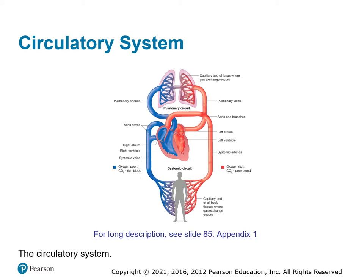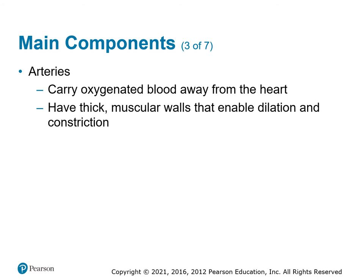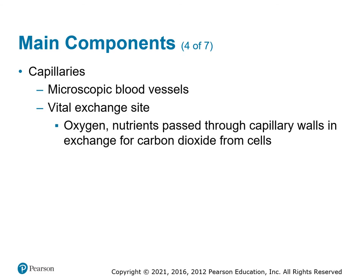Any one problem with that system causes shock. The primary function of the heart is to move blood throughout the body — blood is the mechanism to move nutrients, gases, and waste products. The heart must have an adequate rate and rhythm; cardiac output is determined by rate, rhythm, and volume. Arteries carry blood away from the heart and have thicker walls that allow dilation and constriction to control blood pressure based on the needs of the body.